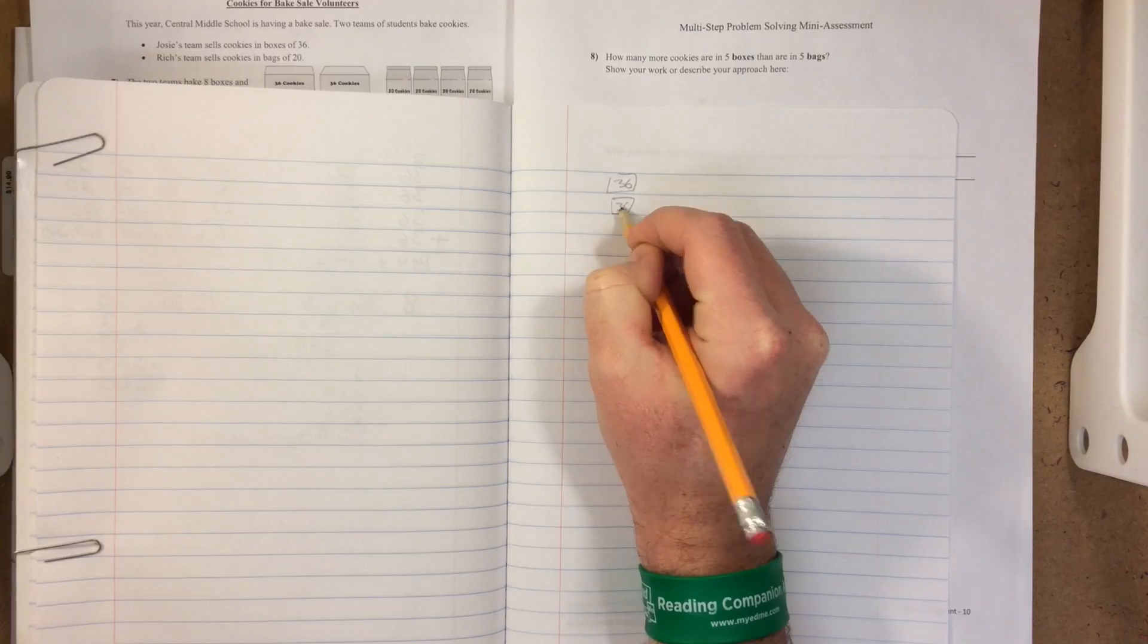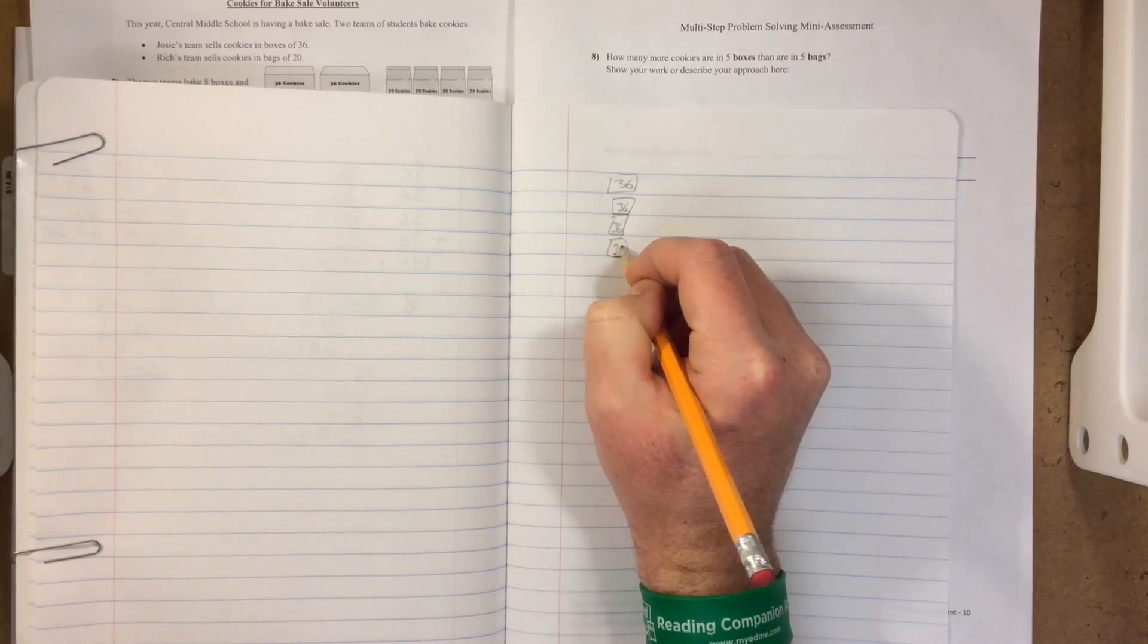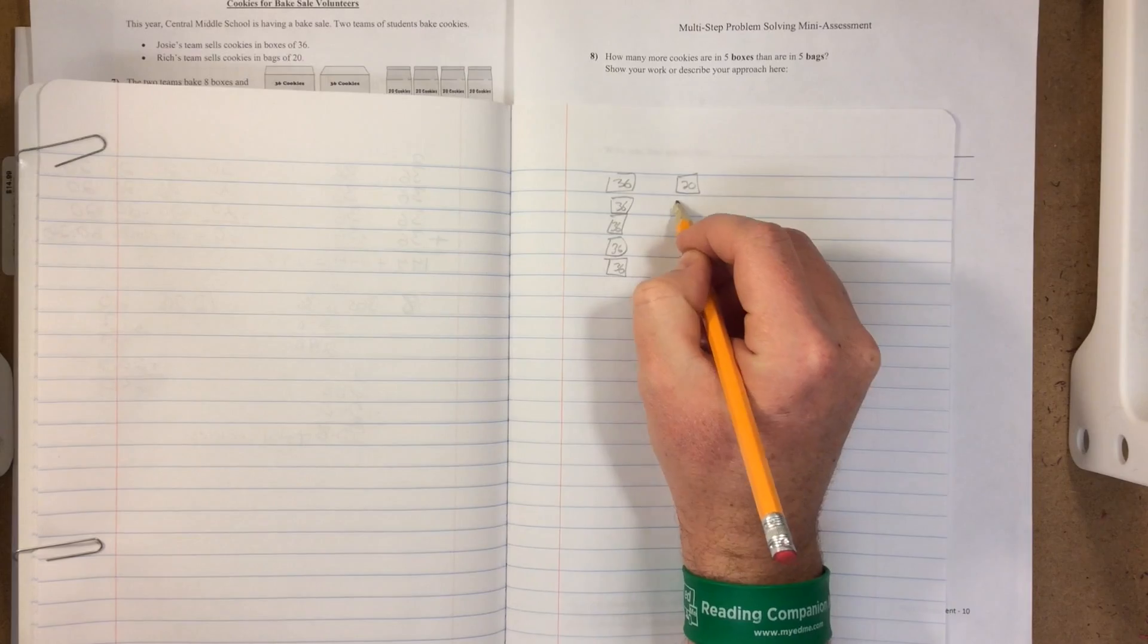So each box has 36 cookies, so we can draw 5. We can draw 5 20s here because each bag has 20.